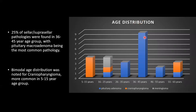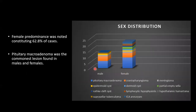Age distribution: 25% of sellar or suprasellar lesions were found in the 36 to 45 year age group, with pituitary macroadenoma being the most common pathology. A bimodal age distribution was found in craniopharyngioma, occurring in the 5 to 15 years and 55 to 65 years groups, with the 5 to 15 year age group being more common. Sex distribution: female predominance was seen, constituting 62.8% of cases. Pituitary adenoma was the most common lesion in both males and females, followed by craniopharyngioma.